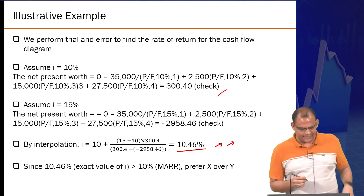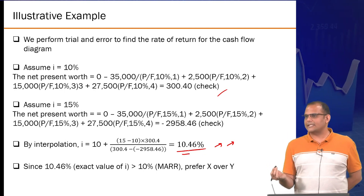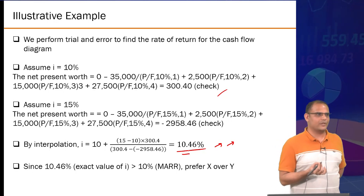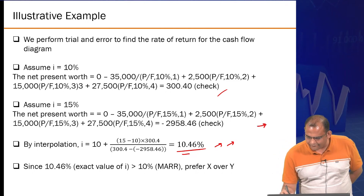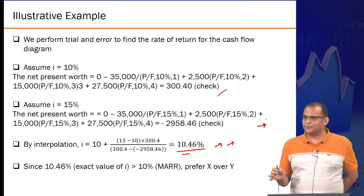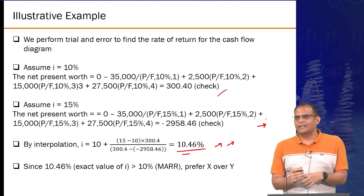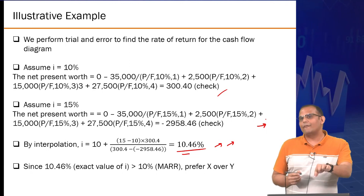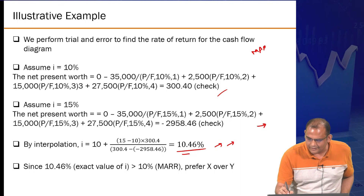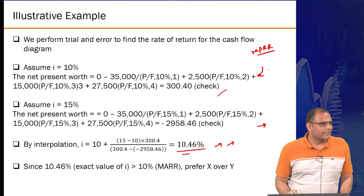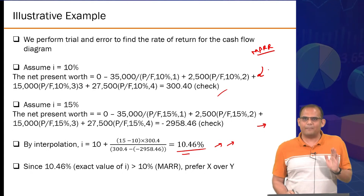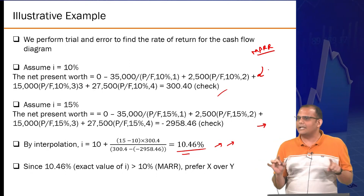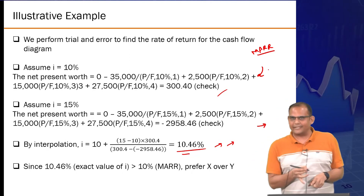Since 10.46 percent is greater than your minimum acceptable rate of return MARR of 10 percent, you should prefer option X over option Y. Here is the trick: if the question only asks for the decision — not the absolute incremental rate of return — you don't need to do the full interpolation. Just the first calculation at your MARR value: since it gives a positive present worth, the actual I* would be higher than MARR, meaning the decision is already clear — X is preferable over Y.